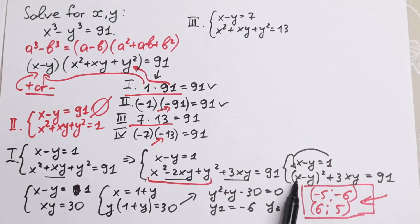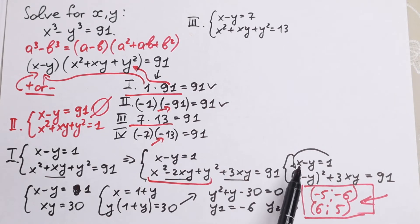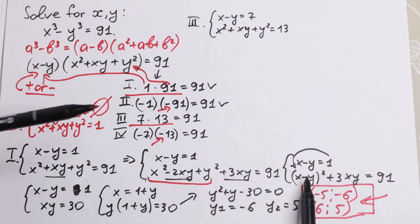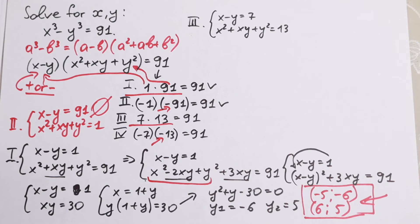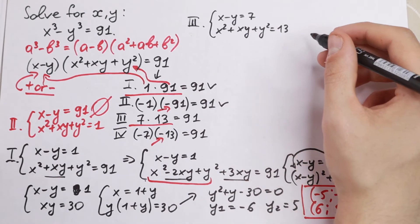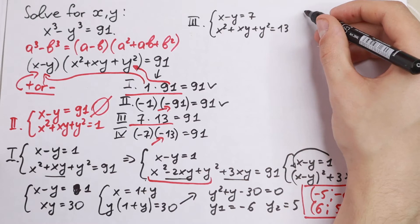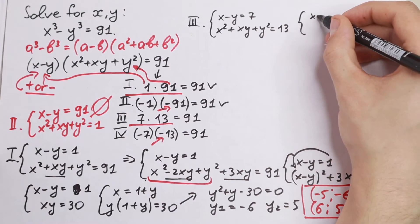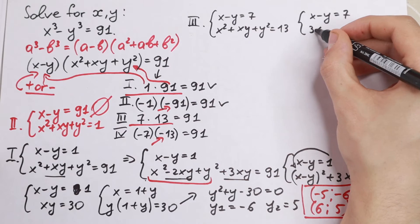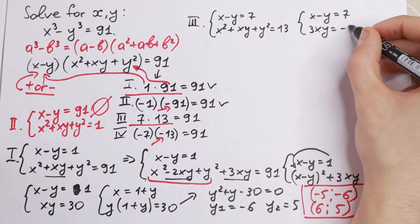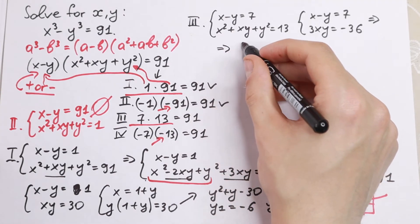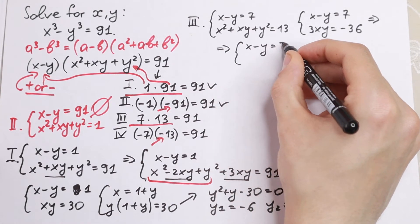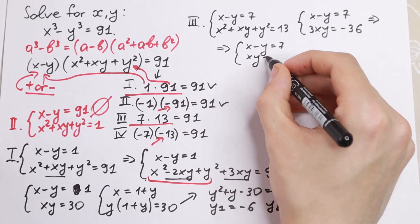Completing the square again: (x minus y) squared plus 3xy equals 13, and x minus y equals 7. Substituting 7: 49 plus 3xy equals 13, so 3xy equals minus 36, giving xy equals minus 12.